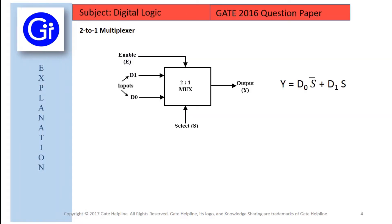So friends, now we will see what is a 2 to 1 multiplexer and how it works. A 2 to 1 multiplexer consists of two inputs that is D0 and D1, one select input S and one output Y. Depends on the select signals, the output is connected to either of the inputs.